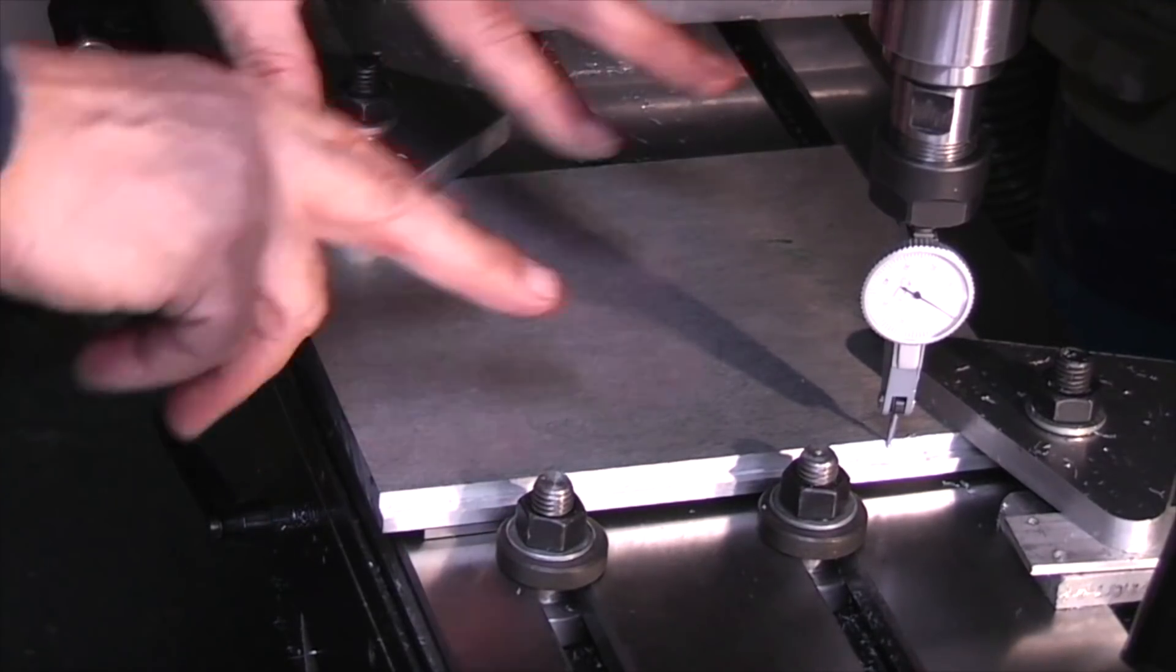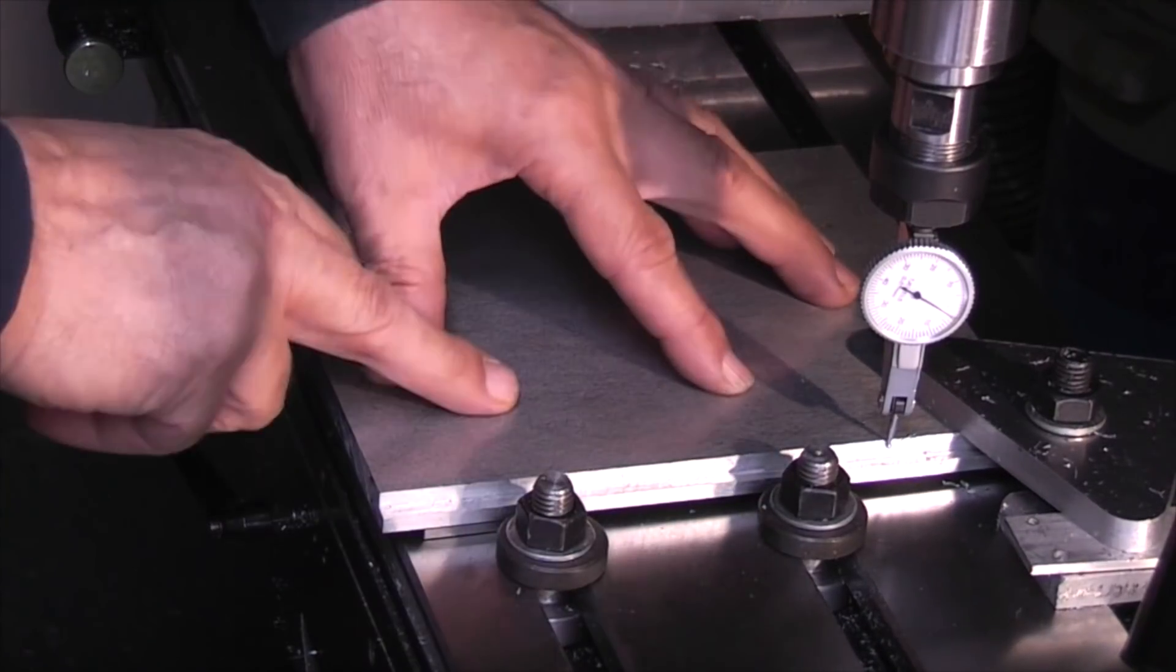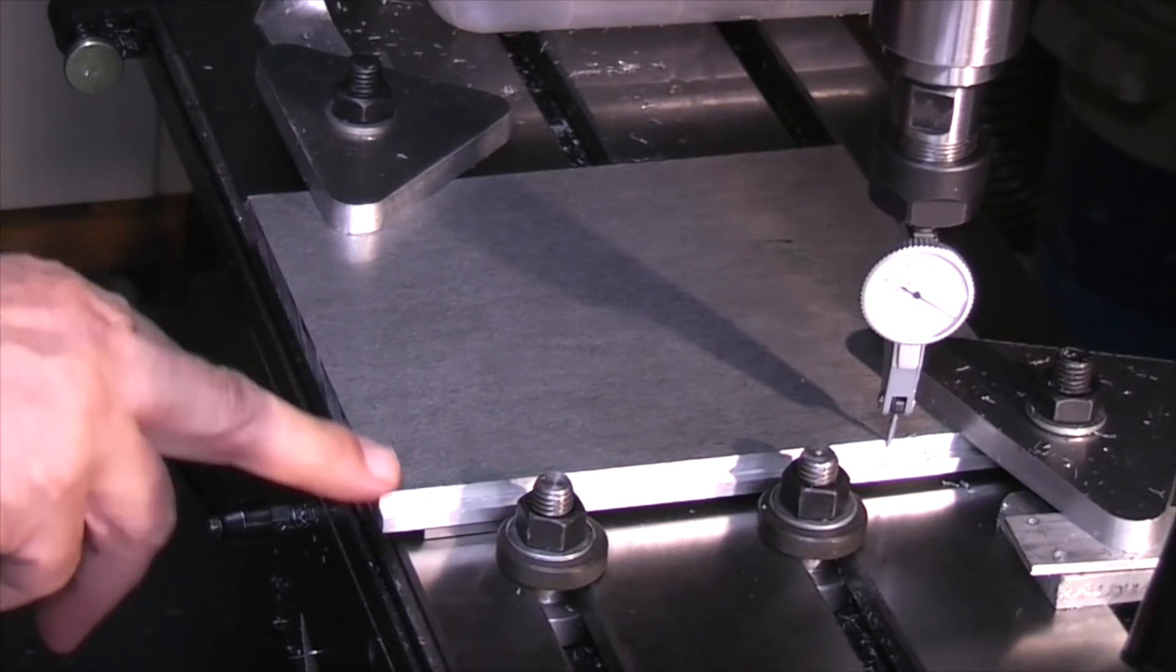So next time I can take the clamps off, take the plate off and the next plate will just go up against the washers and I know it's square when I'm machining this outside edge.